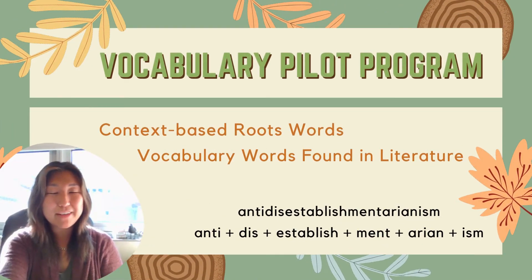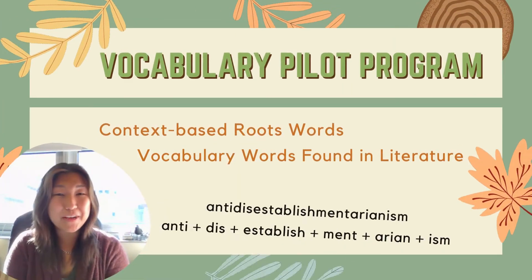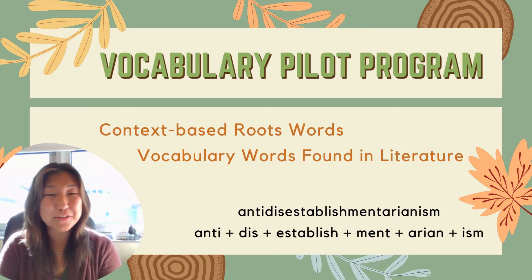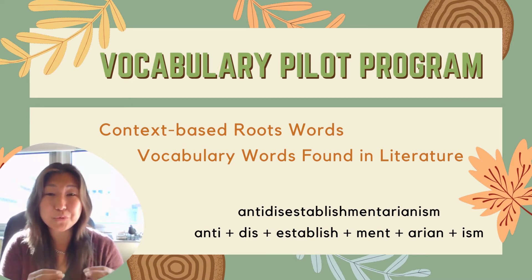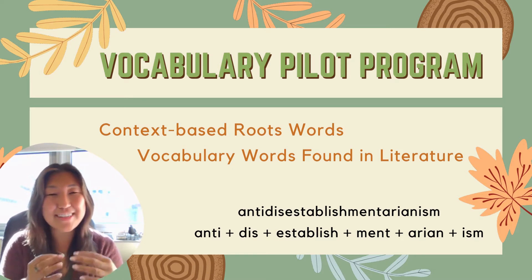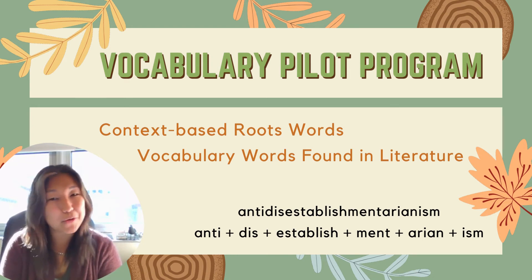Our vocabulary program this year will be an etymology-based program using context-based root words that can be found in the classroom literature that we are reading. The example below is what I used to introduce this program to the students earlier this week. A lot of them do not know what anti-disestablishmentarianism means, but when you break it down to its individual word parts — the prefixes, suffixes, and the roots — the students were able to make an educated guess on what that unfamiliar vocab word might mean. That is the whole point of this vocabulary program.